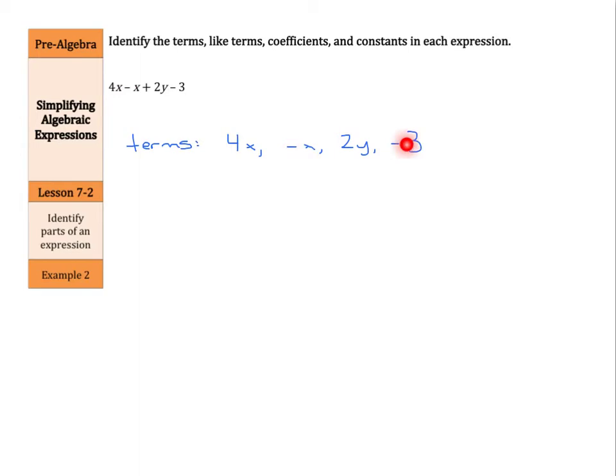Now, like terms is next. Here, I would have the 4x and negative x, and that's about it. The y can't group with anything. The minus 3 can't group with anything.